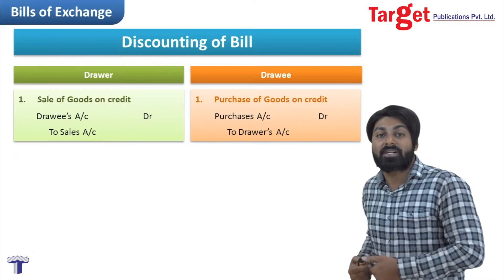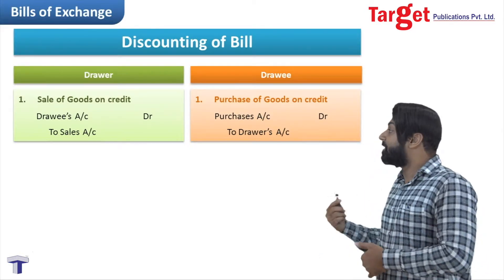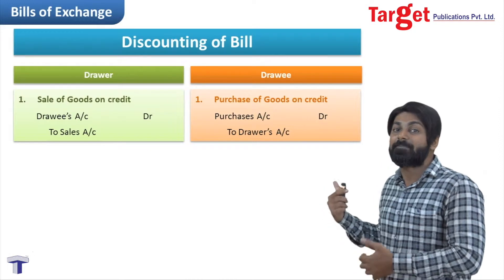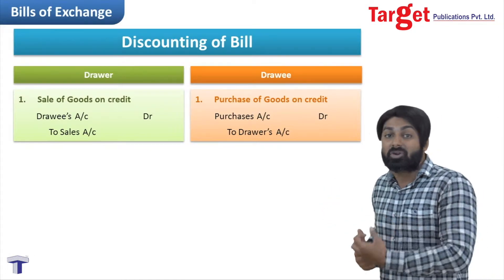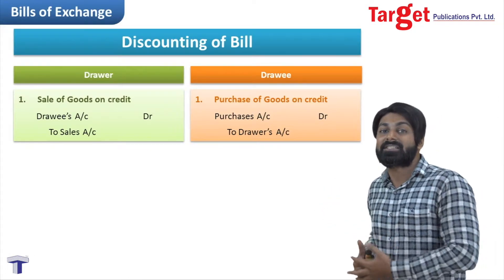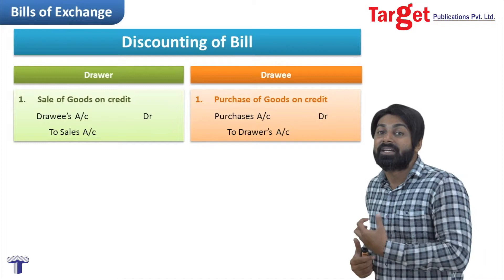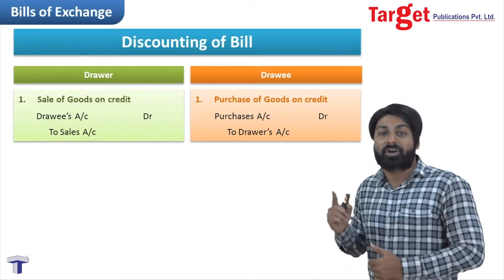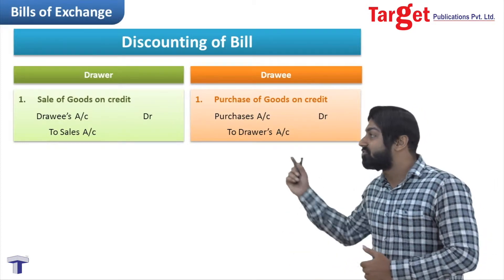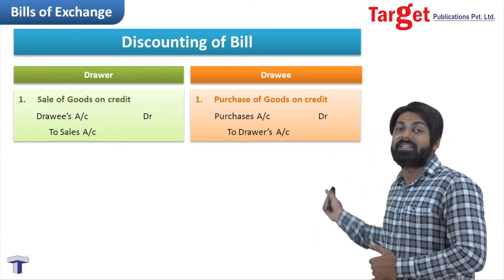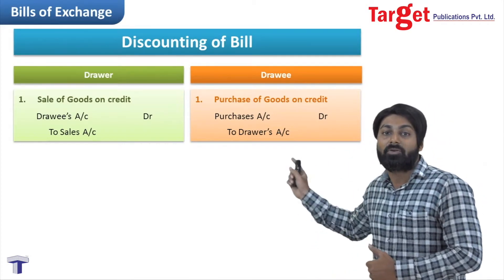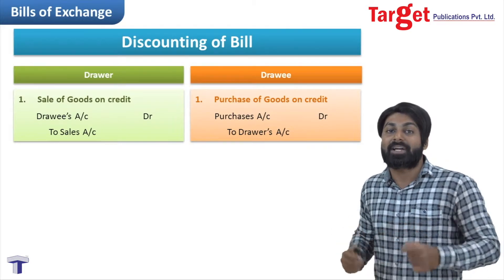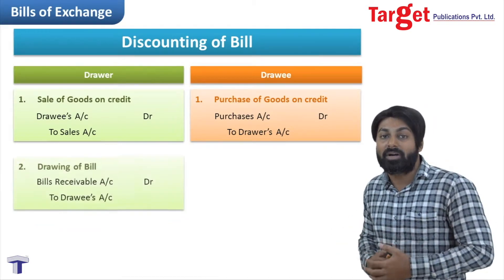In the books of the drawee, the entry will be: Purchases account debit to Drawer's account. Purchases account is debited because purchases are an expense — debit all expenses and losses. Drawer's account is credited because credit the giver. So in the books of the drawer: Drawee's account debit to Sales account; in the books of the drawee: Purchases account debit to Drawer's account.